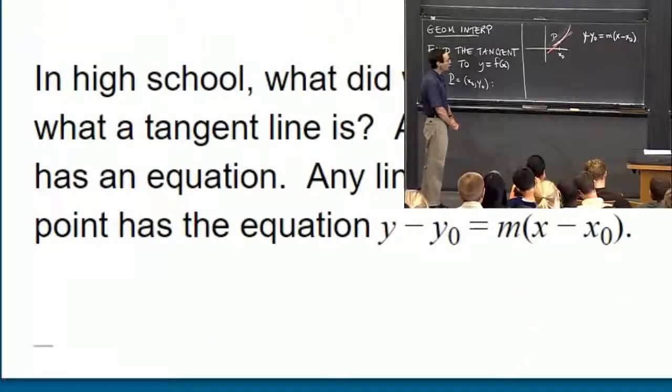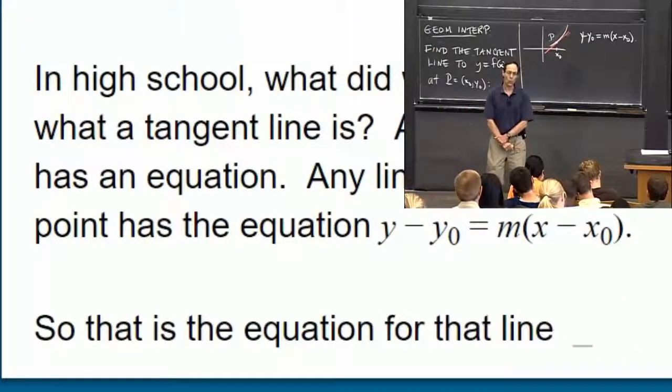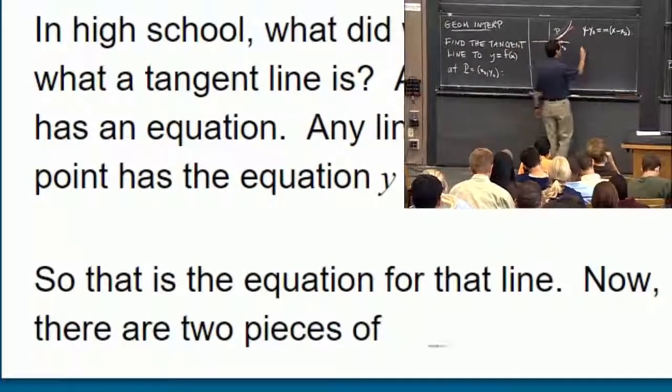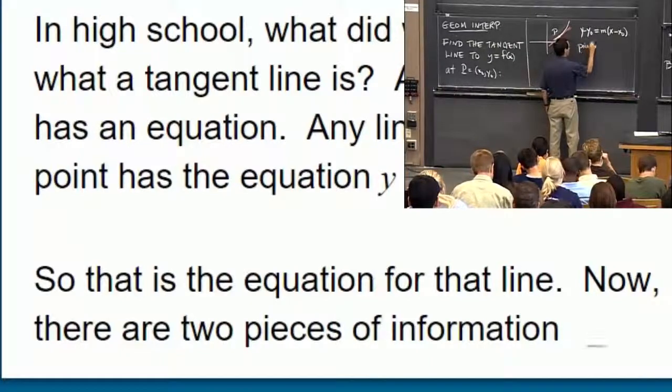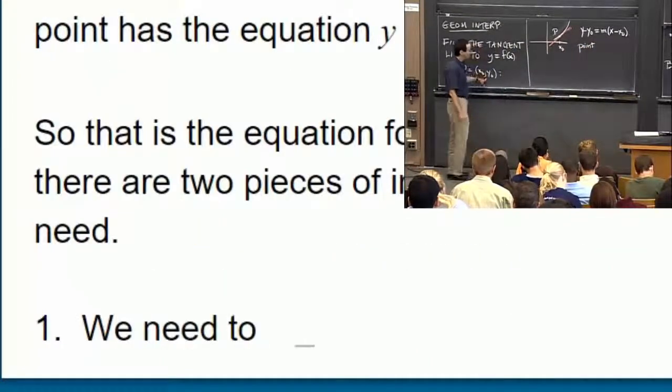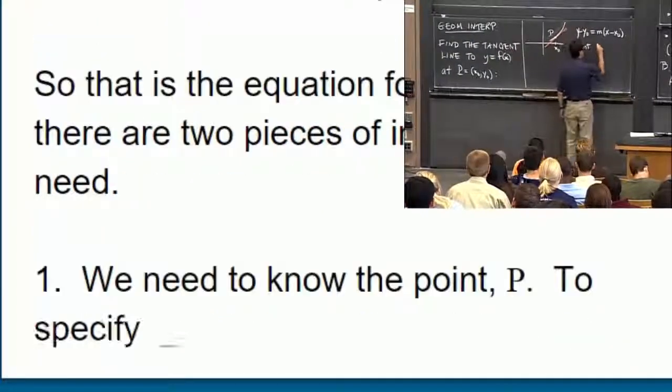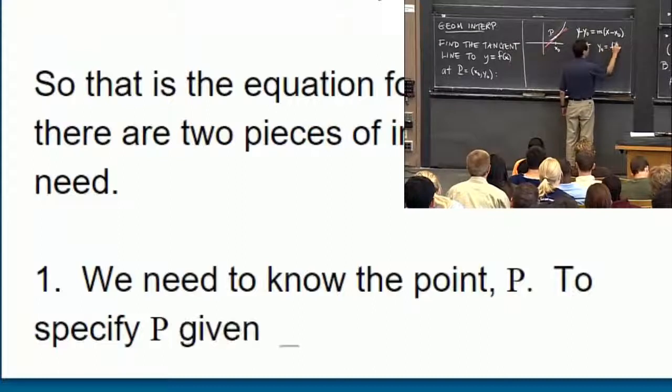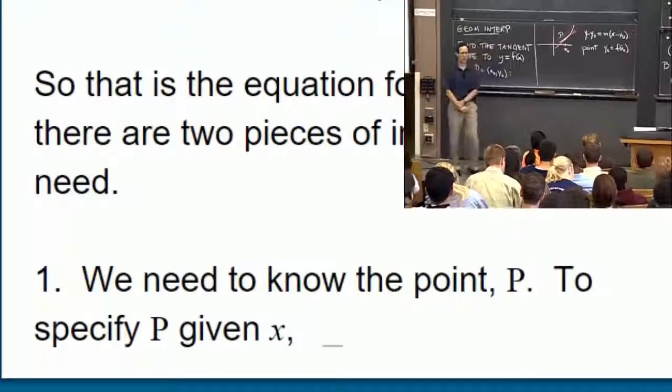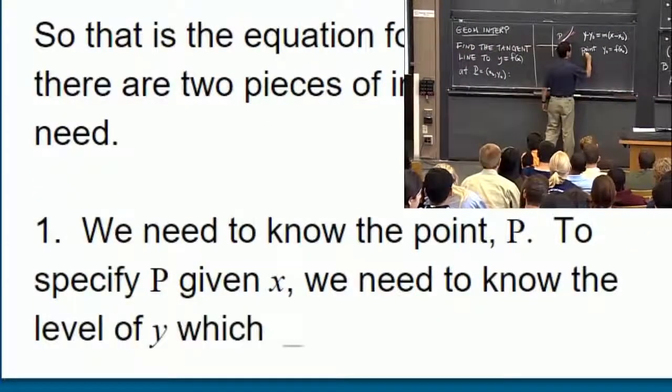And now there are two pieces of information that we're going to need to work out what the line is. The first one is the point. That's that point P there. And to specify P, given x, we need to know the level of y, which is of course just f(x0). Now that's not a calculus problem, but that's a very important part of the process.